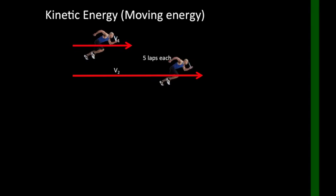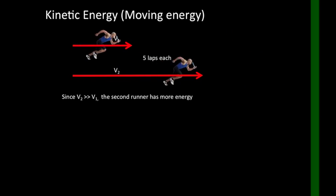Moving objects have another form of energy. These identical runners both have kinetic energy. Since the second runner is moving far faster though, he has the most.